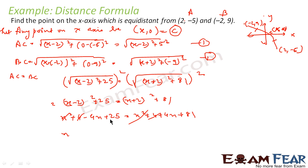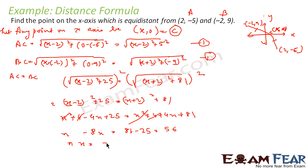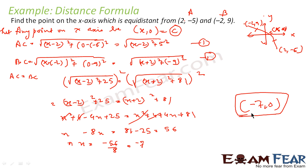We get −8x = 81 − 25 = 56, so x = −56/8 = −7. The point we took was (x, 0), so it becomes (−7, 0). Therefore the point is (−7, 0).